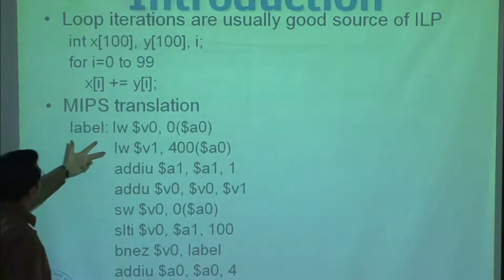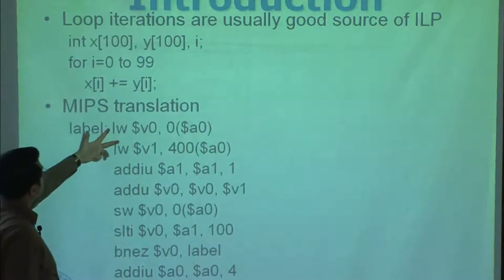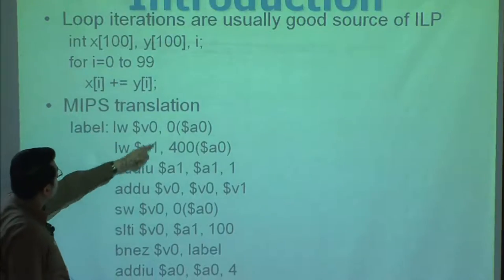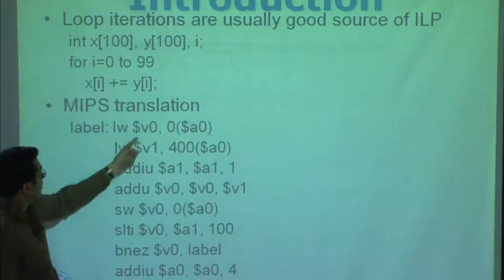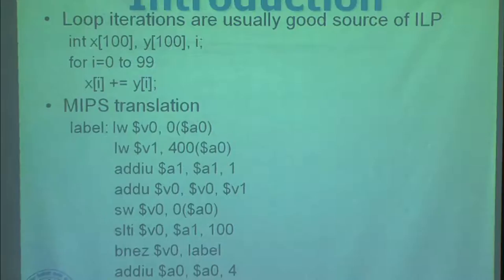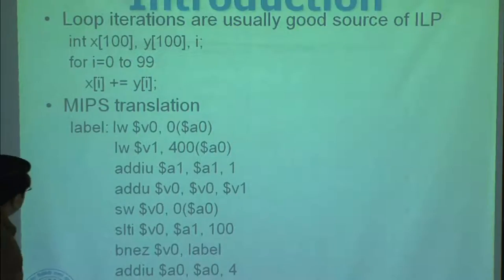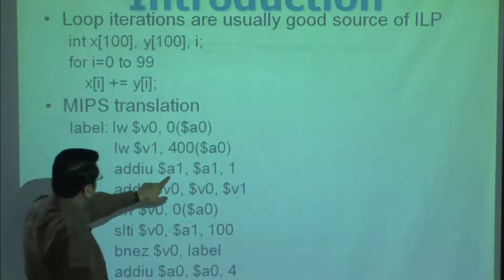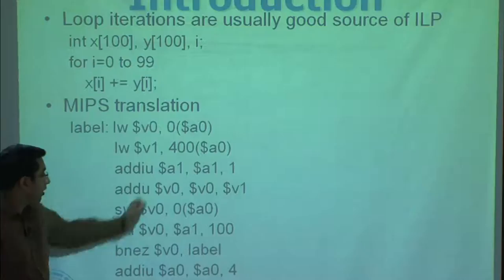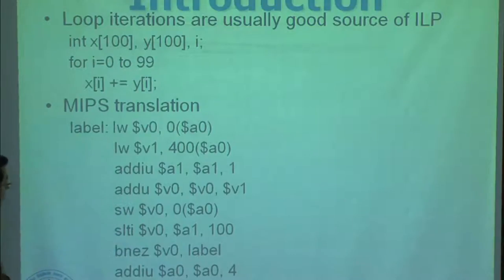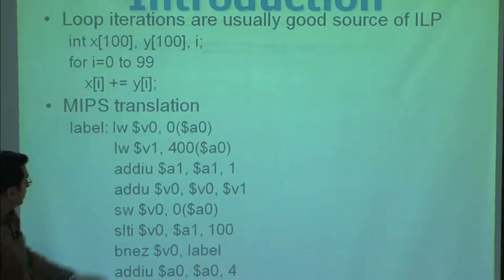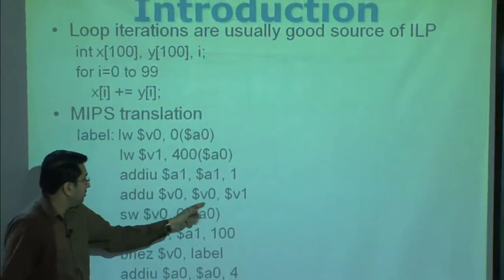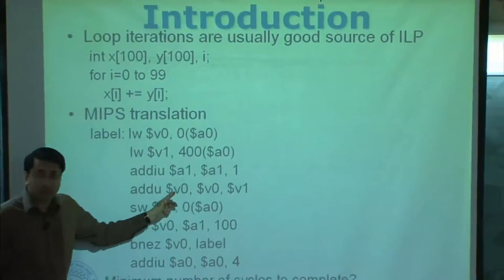These two instructions load the values of x[i] and y[i] into two respective registers. This is the loop iterator, incremented by one. And this instruction adds these two and puts the result in these two.